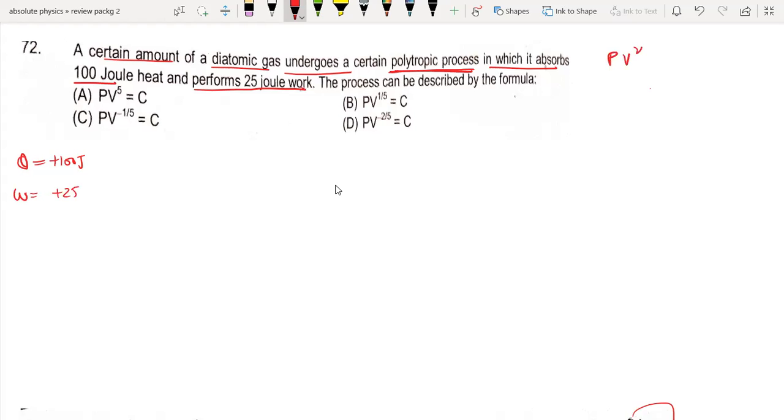We have to find the power x in the polytropic process. Using the first law, Q equals delta U plus W. So Q equals 100, delta U equals n*Cv*delta T, and work done is 25. This gives us 75 equals n*Cv*delta T. For a diatomic gas, Cv equals 5R/2, so n*delta T equals 30/R.